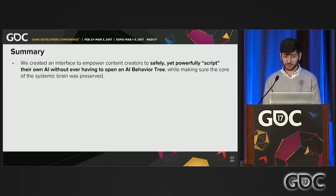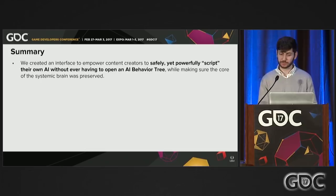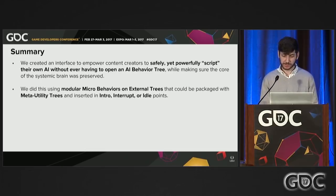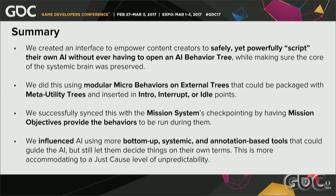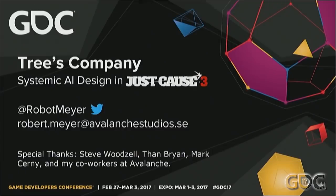In summary, we created an interface that empowered content creators to safely yet powerfully script their own AI without ever having to open a behavior tree, while making sure the core systemic brain was preserved. We did this using modular micro behaviors on external trees that could be packaged with meta utility trees and inserted into intro, interrupt, or idle points. We successfully synced this with the mission system's checkpointing by having mission objectives provide the behaviors to be run during them. And we influenced AI using more bottom-up systemic and annotation-based tools that could guide the AI but would still let them decide things on their own terms — much more accommodating to a Just Cause level of unpredictability. Thank you all for attending.